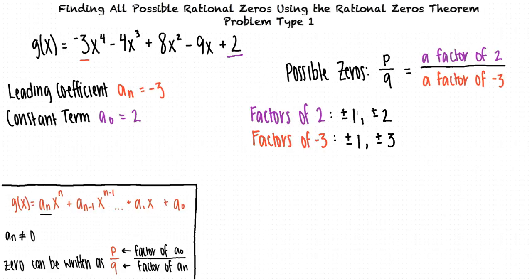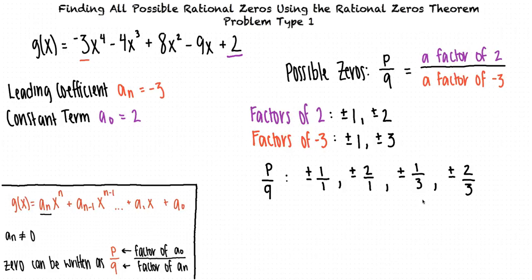From here, we'll divide each factor of 2 by each factor of negative 3 to get all the possible values of p divided by q, which are positive or negative 1 over 1, positive or negative 2 over 1, positive or negative 1 third, and positive or negative 2 thirds. We can simplify 1 over 1 to 1 and 2 over 1 to 2. So our final list of possible rational zeros for the polynomial g of x is positive or negative 1, positive or negative 2, positive or negative 1 third, and positive or negative 2 thirds.